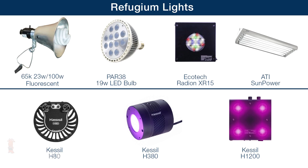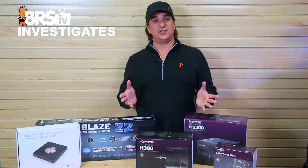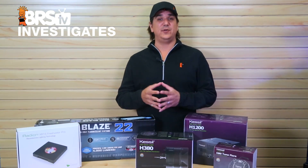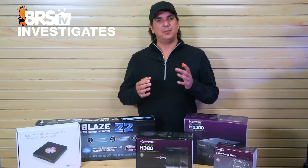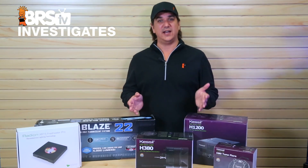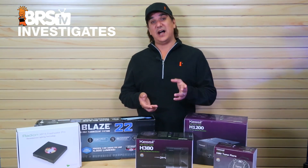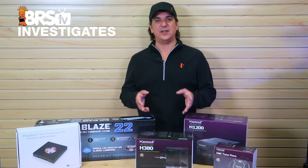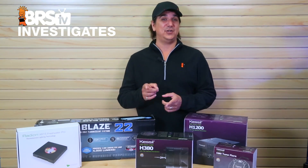We are going to look at the compact fluorescent screw-in bulb, Rapid LED fuge bulb, Radion XR15, ATI Sun Power, and the Kessil H80, H380 and H1200. We tested over a 36 square inch area for those of you with ridiculously large fuges, but our focus is going to be on the center two foot by two foot area at a 12 inch mounting height. We also tested at a 24 inch mounting height, and since chaeto normally floats to the surface we are going to take the measurements in air.